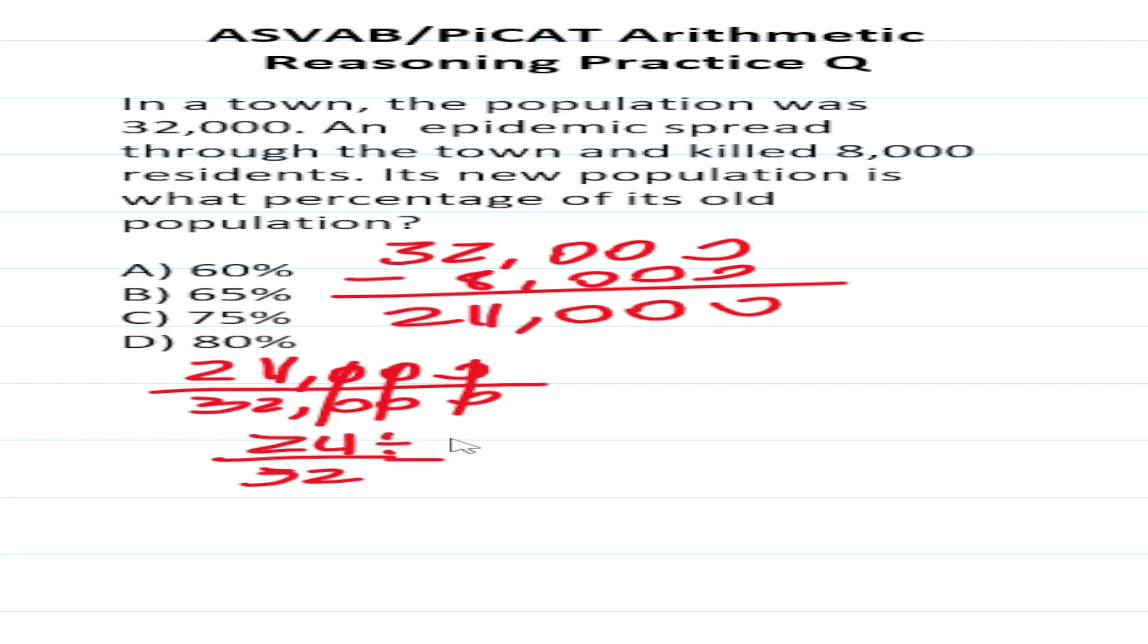You should realize that these have a common factor of 8, so this becomes 3 over 4. You should know that the decimal equivalent of 3 fourths is 0.75, which is the same thing as C, 75%. So its new population is 75% of its old population.